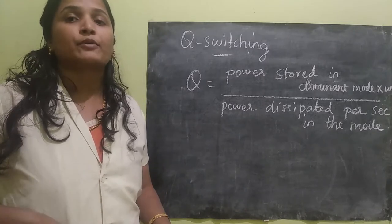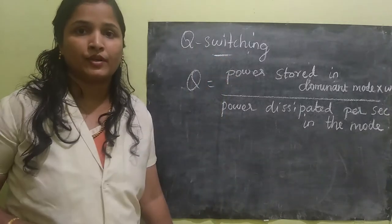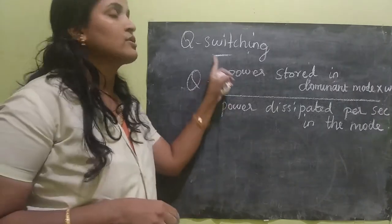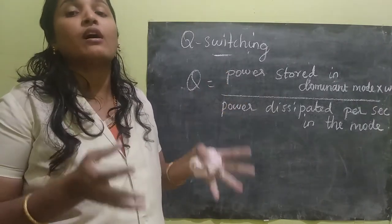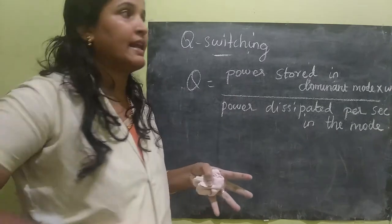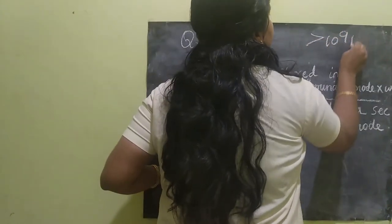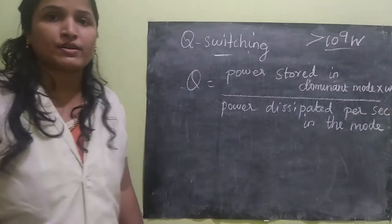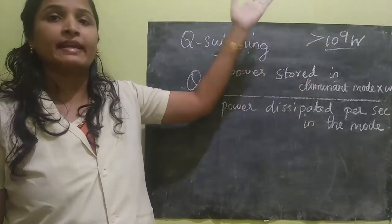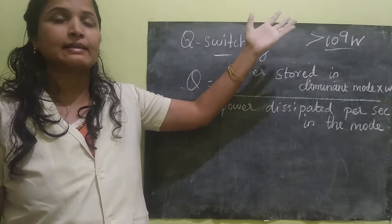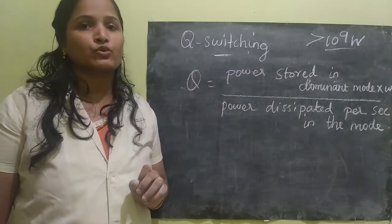Good morning students. Today I am going to teach you Q-switching. Basically Q-switching is a technique for increasing the power of the laser to greater than 10 to the power 9 watts. It is very high. In order to achieve very high power laser, Q-switching technique is used.